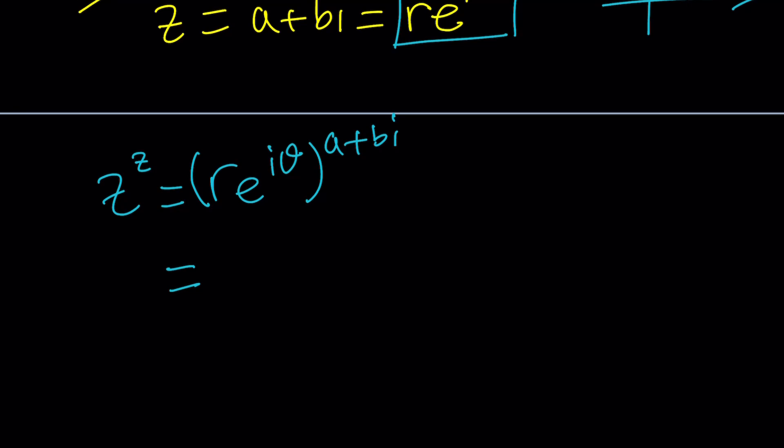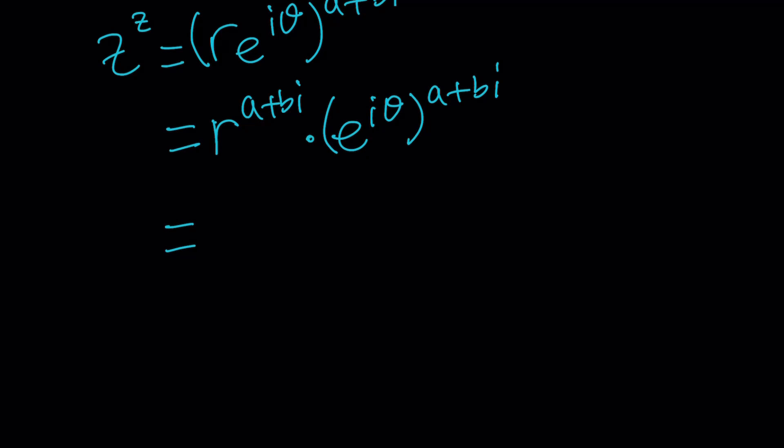I want to first of all separate these two things like R to the power A plus B I times E to the I theta to the power A plus B I. Of course this is a real number. R is a real number and A and B are real numbers but when you raise R to the power A plus B I then you can kind of separate the exponents, right? We can kind of write this as and the same thing goes for E to the Z. When you have something like E to the A plus B I you can write it as E to the A times E to the B I and this just happens to be the new R or the modulus. Anyways, this becomes R to the A times R to the B I.